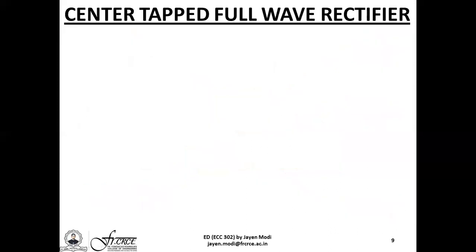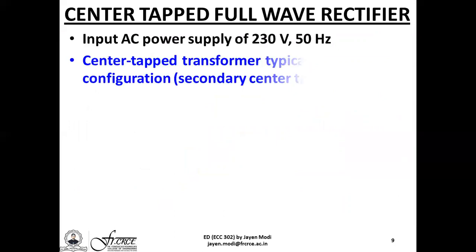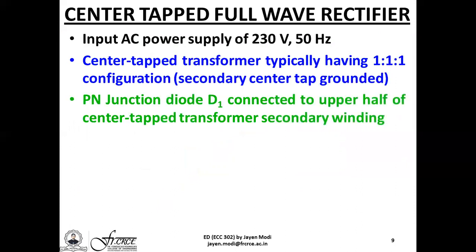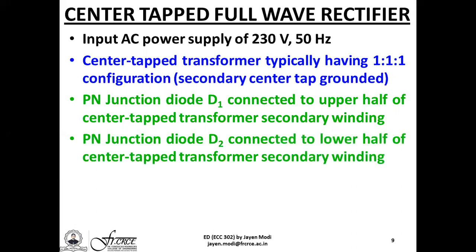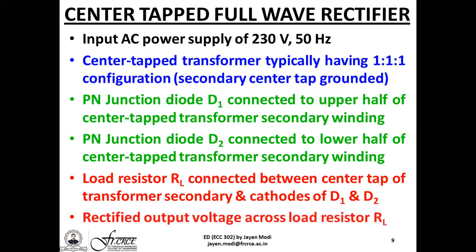The input is 230V AC 50Hz. The center-tapped transformer has a 1:1:1 configuration with the secondary center tap connected to ground. Diode D1 is connected to the upper half and D2 to the lower half of the secondary winding. The load RL is connected between the center tap and the cathode terminals of D1 and D2. It is across RL that the rectified output voltage is obtained.